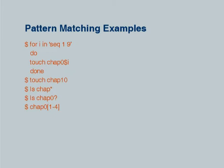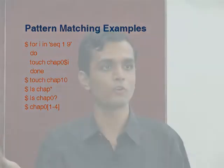With brackets, suppose you want to list from chap01 to chap04 only and not up to chap09, then you can give a sequence which says from 1 to 4 — so 1, 2, 3, 4 it will match.